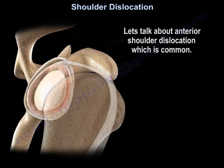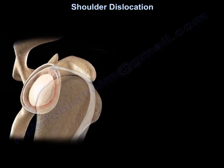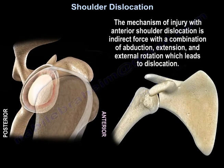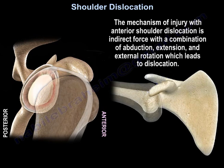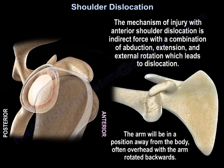The mechanism of injury for anterior shoulder dislocation is abduction, extension, and external rotation. The arm will be in a position away from the body, often overhead, with the arm rotated backwards.